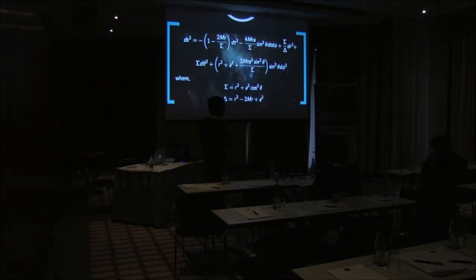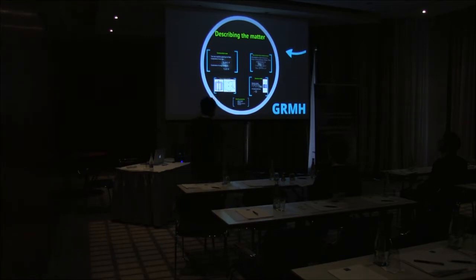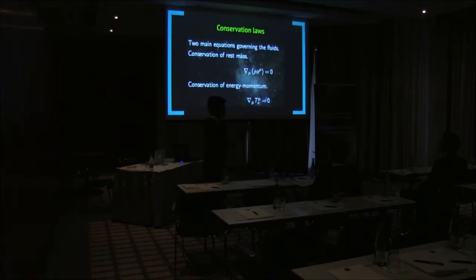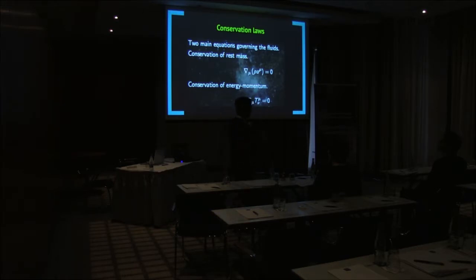All the calculations and simulations I will show are based on a Kerr metric with spin parameter A and mass M. To describe the matter we need the energy-momentum tensor T_μν — if you know T_μν and you know the densities and four-velocity, you can just use the conservation law to derive all the equations and evolve them numerically. The most important thing is T_μν; depending on your considerations you can consider different types of fluid, with or without magnetic field.